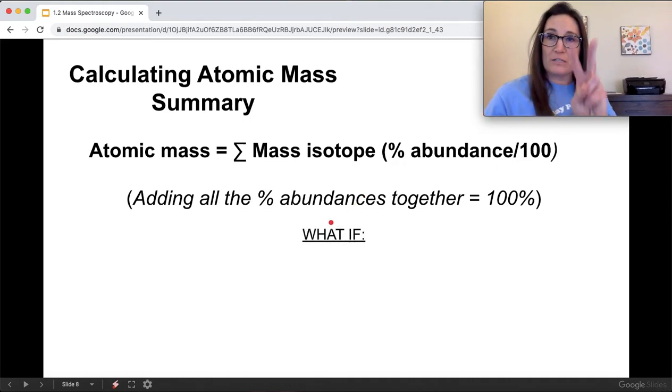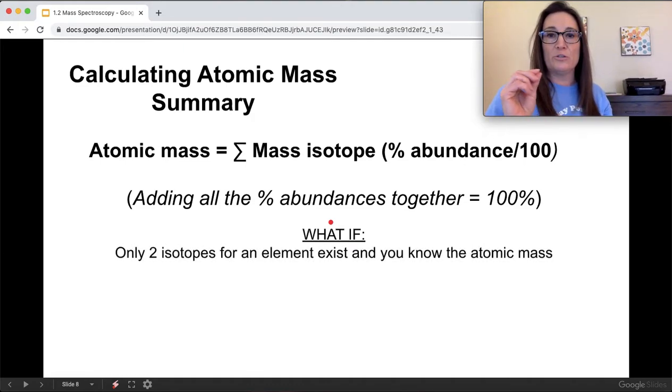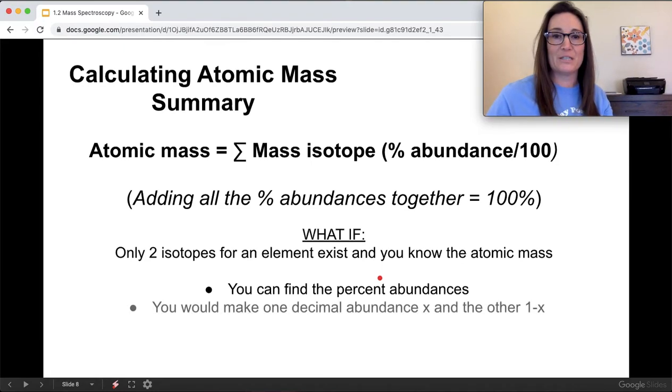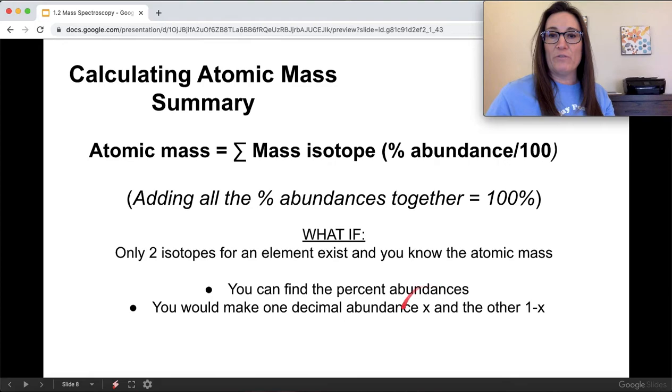But sometimes they'll just have two isotopes, so this is pretty common. What if you have two isotopes, and you know the atomic mass, kind of like a math problem, could you go backwards and find the percentages knowing those pieces of data? And you can. The first thing you have to do is find the percent abundances. You would just say that one of them is x, and then the other one is 1 minus x.